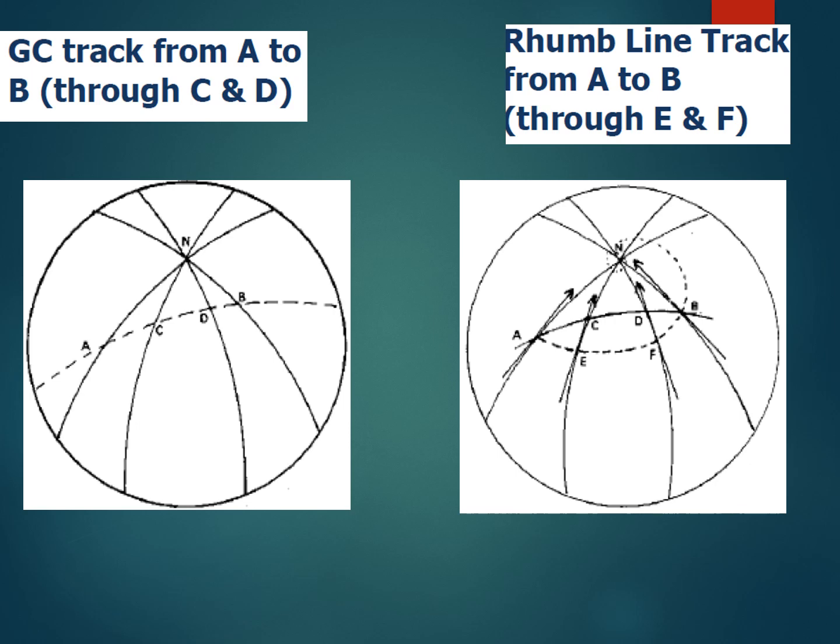Comparing the rhumb line track from A to B, you can see that the rhumb line track comes as a curved line on a gnomonic chart or on the surface of the earth. That's why you cannot draw rhumb line courses on gnomonic charts used for great circle sailing — you can only draw great circle courses on them.